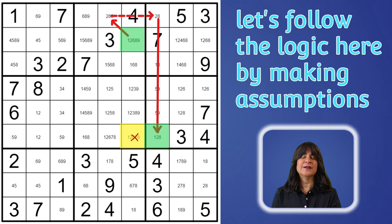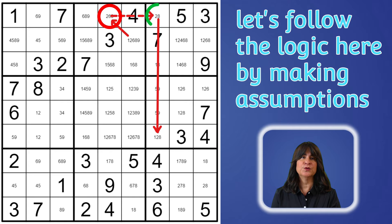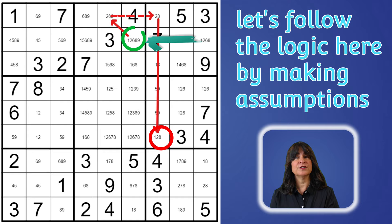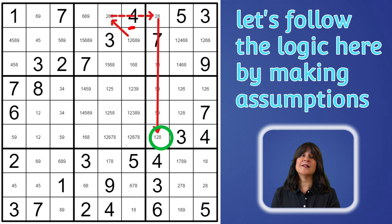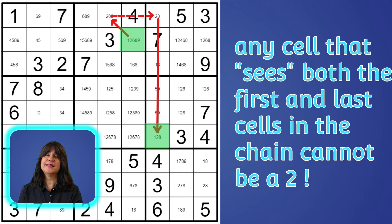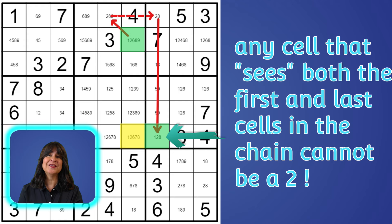Let's go through the logic. This first cell is either a two or it is not a two. If it's a two, then the next cell is not a two, and the following cell is a two, and then the last cell is not a two — so the first cell is a two and the last cell is not. In the other scenario: if the first is not a two, then the next is a two, then not a two, and then the last cell is a two. So the first cell is not a two but the last cell is. Either way, one of these two cells has to be a two, so any cell that sees both the first and last cell in the chain cannot be a two and can be eliminated.